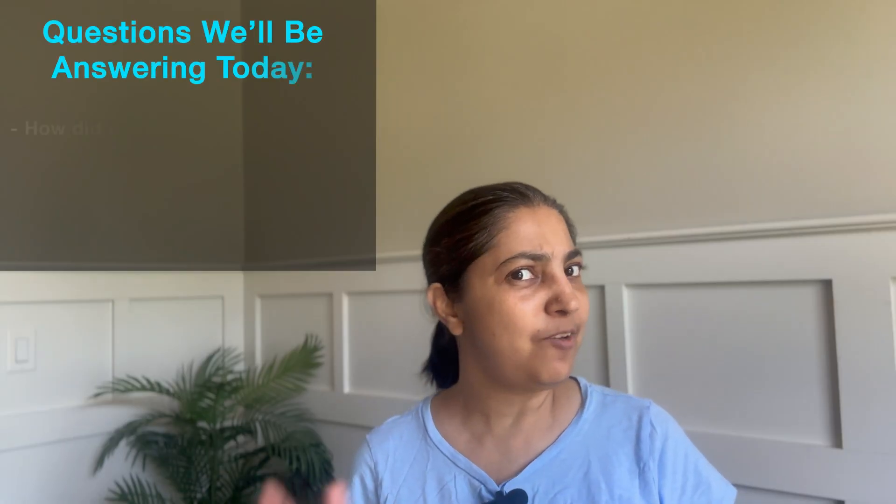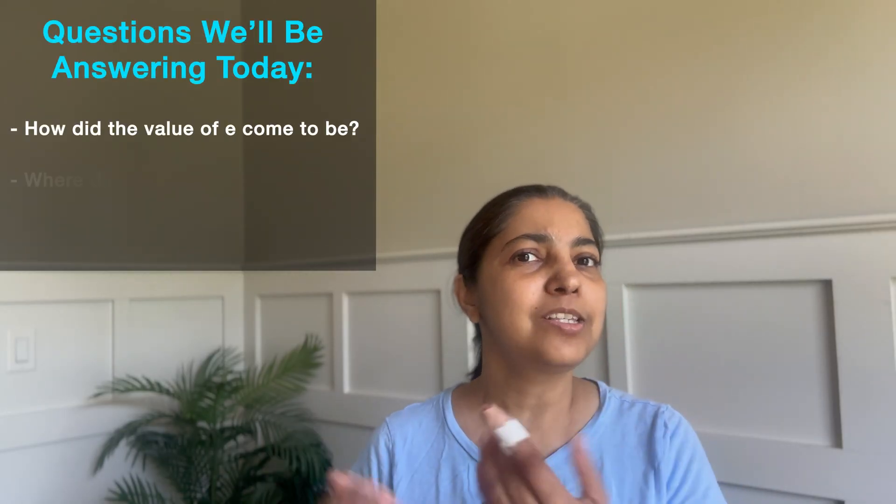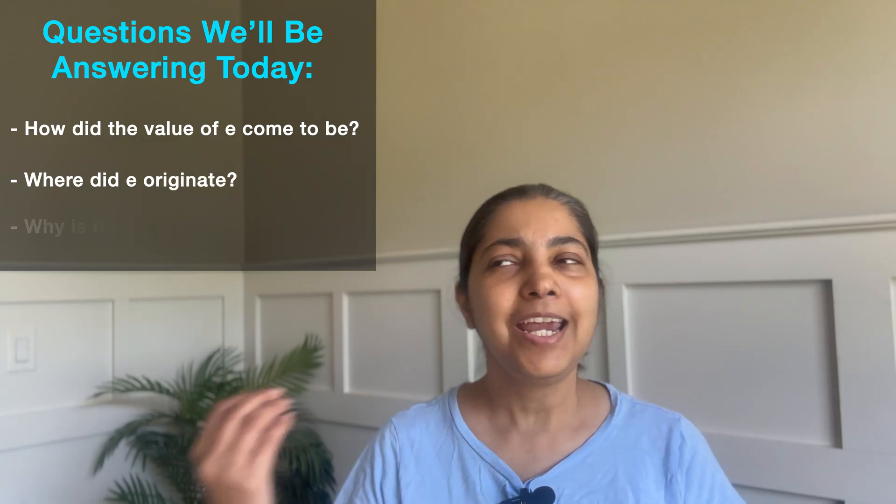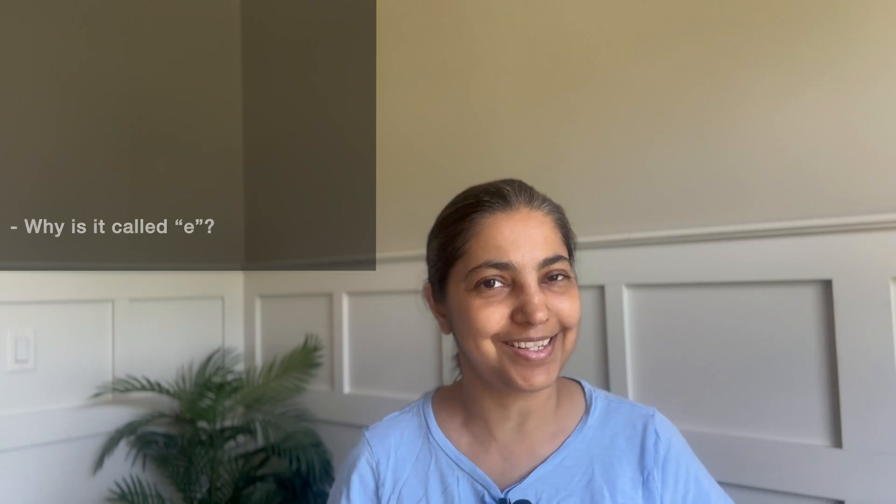Popularly known as Euler's number. But ever wondered or been curious as to why the value of e is 2.718? Where is it coming from? Why is it called e and no other alphabet?